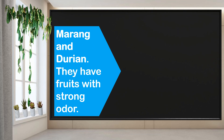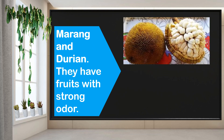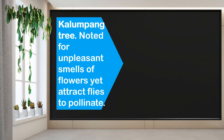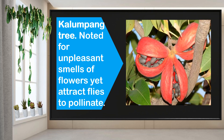Marang and durian are kinds of fruits with strong odors. The kalimpang tree is noted for the unpleasant smell of its flowers, yet it attracts soft flies to help pollinate its flowers.